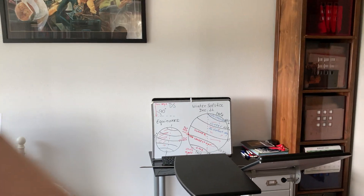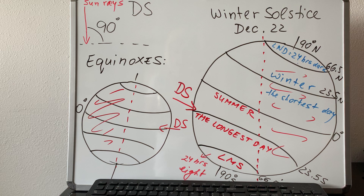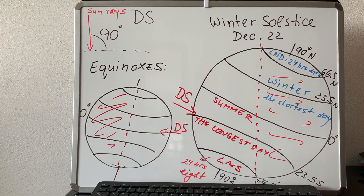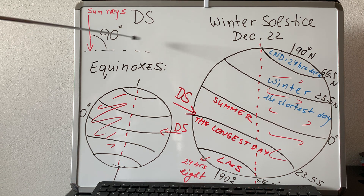Now we're going to talk about four events: equinoxes and solstices. These four events happen in the third week of the month, and the day can vary — it can be the 21st or 22nd. Only one latitude can be at a right angle with the sun rays, and this is called direct sun. You can see the sun rays and the surface at 90 degrees — this is the maximum possible sun angle.